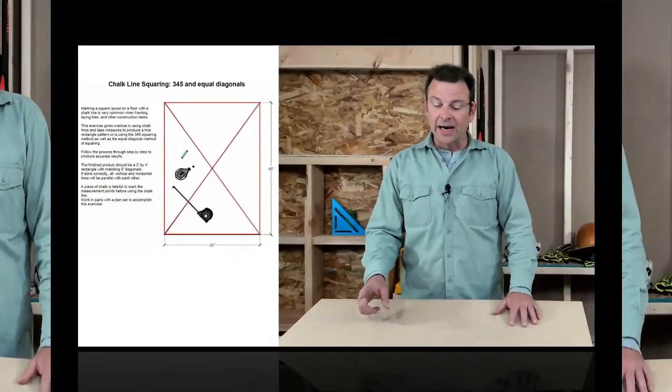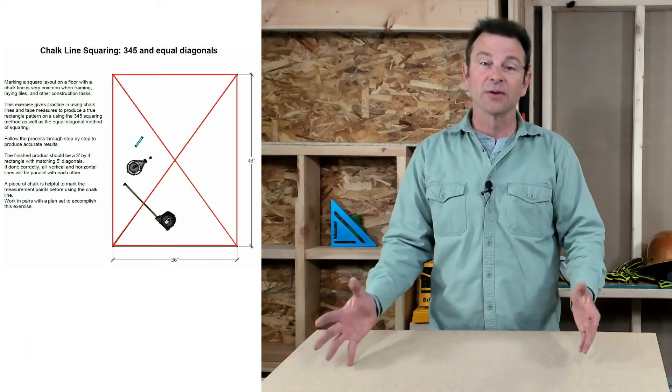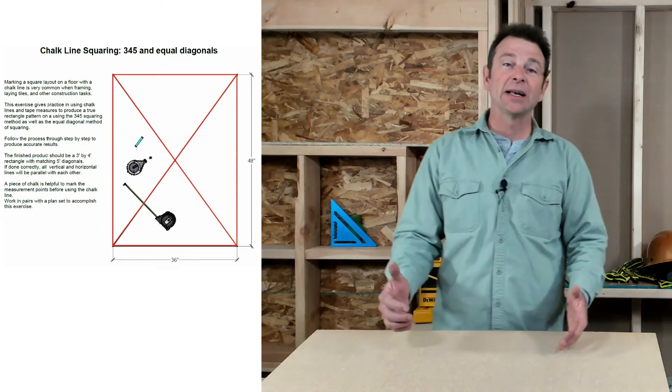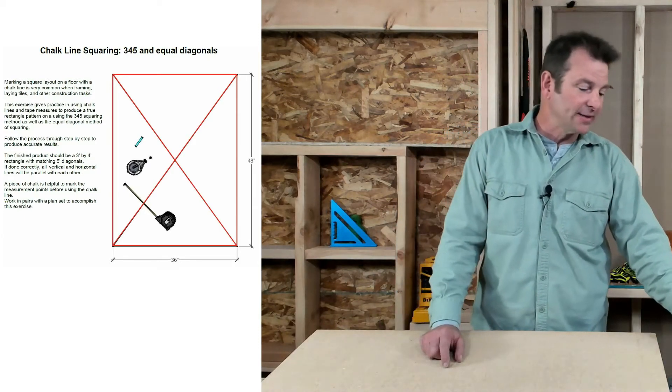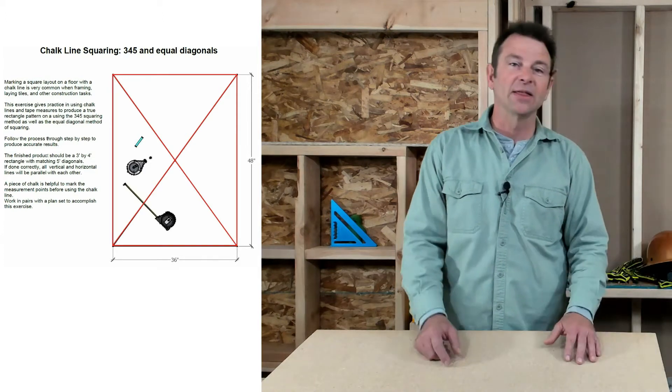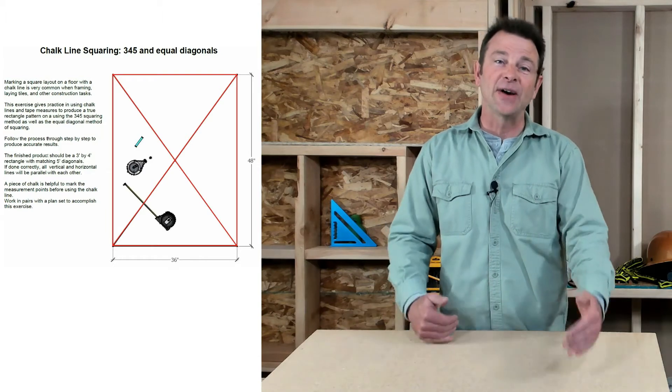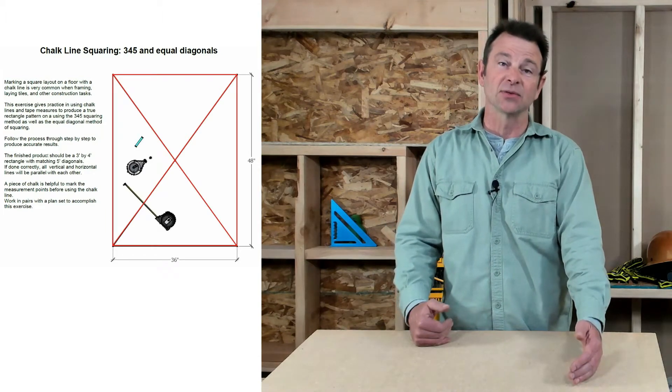To start with, I am using a smaller version of this to demonstrate it today to get it on camera. Keep in mind the plans, if you pull your plans up, they're going to call for a 3-4-5 triangle made with 3 feet, 4 feet and 5 feet for the three sides of the triangle.